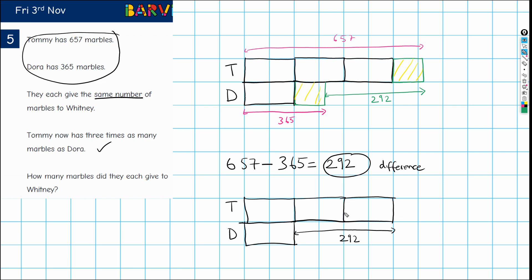So the difference is these two equal parts. So we need to have 292, we need to divide that by 2, which gives us 146.